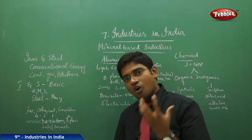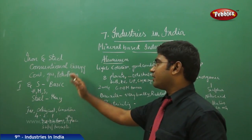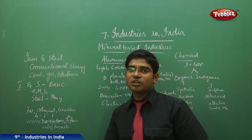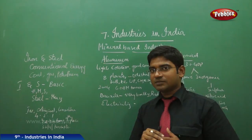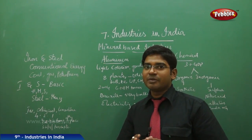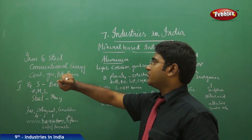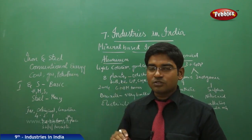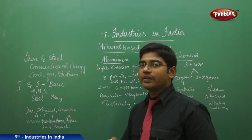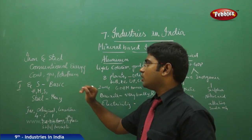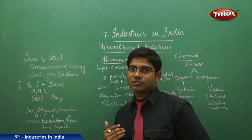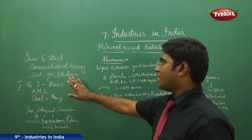Iron and steel are required for all categories of industries. The conventional sources of energy in India are found at various places, and India is abundantly rich in mineral contents. Iron and steel, being the basic requirement of every industry, also need conventional energy like coal, gas, and petroleum, which provide the sources of energy to run the industries.